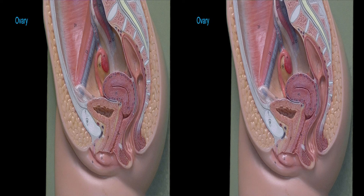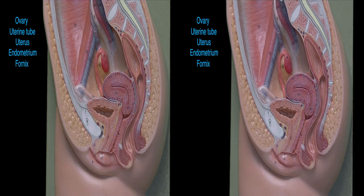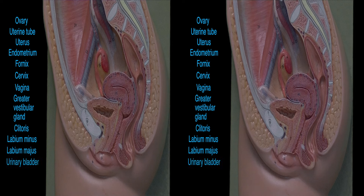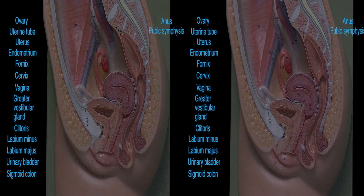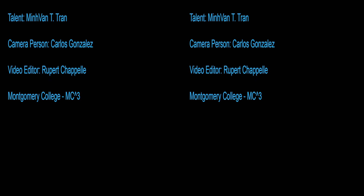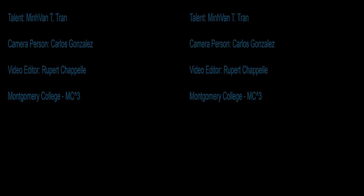Female Reproductive System. Ovary, Uterine Tube, Uterus, Endometrium, Fornix, Cervix, Vagina, Greater Vestibular Gland, Clitoris, Labium Minus, Labia Majora, Urinary Bladder, Sigmoid Colon, Anus, Pubic Symphysis, Urethra.